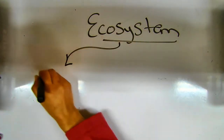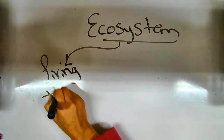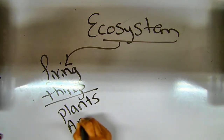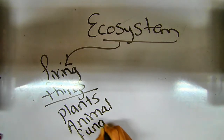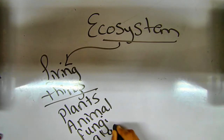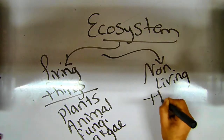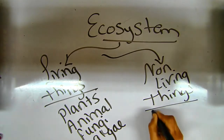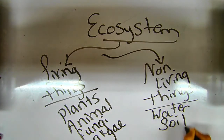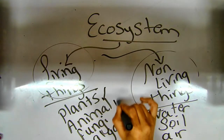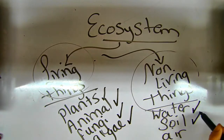Living organisms, or living things, include plants, animals, fungi, and algae. Non-living organisms, or non-living things, include water, soil, and air. That is the natural area of the ecosystem.